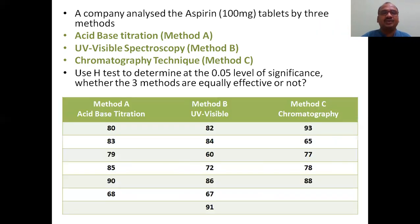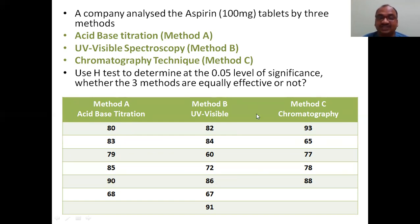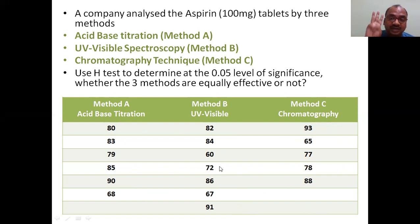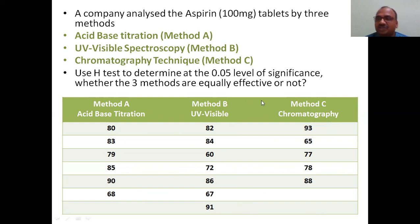Here is the data. Method A, acid-base titration — out of 100 mg, the values obtained were 80, 83, 79, 85, 90, 68. Method B got values: 82, 84, 60, 72, and so on. Keep in mind: three groups are being compared as per the Kruskal-Wallis test. The number of samples in each group is different — Method A has 6 samples, Method B has 7 samples, Method C has only 5 samples. Each group has a different number of samples.